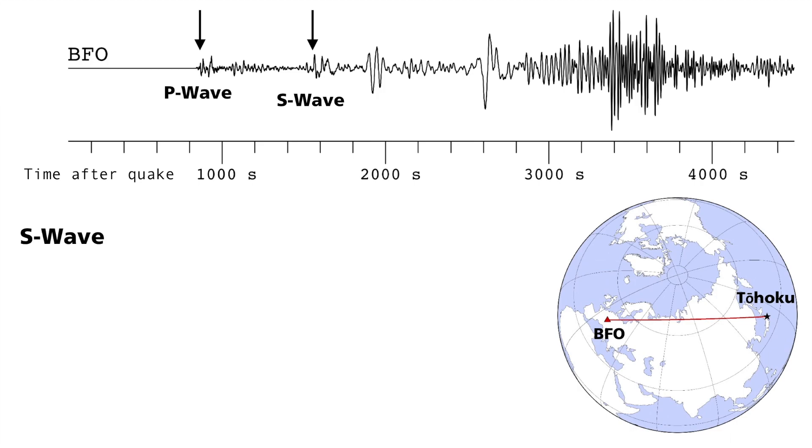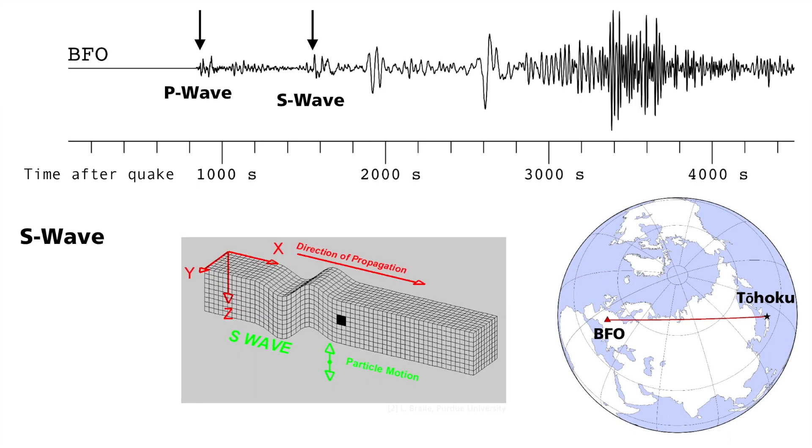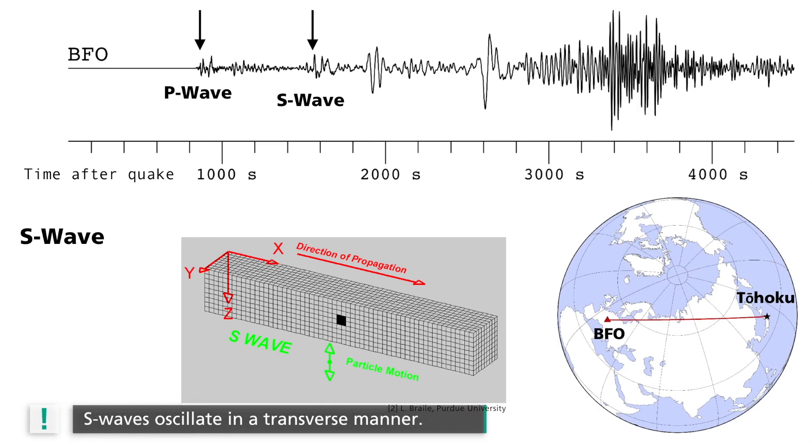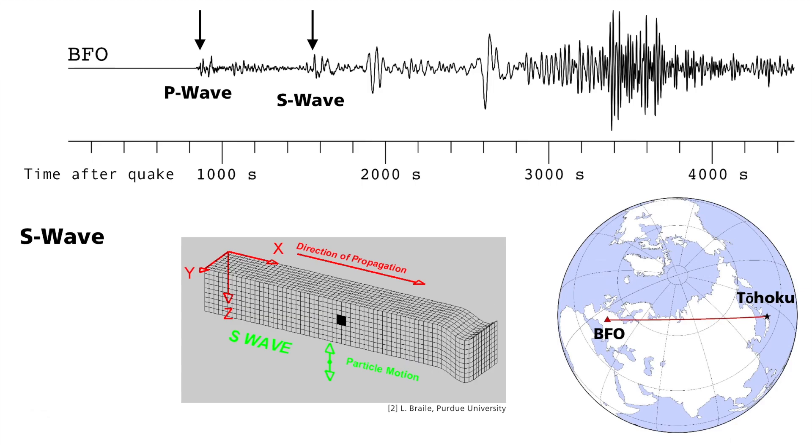S waves, the S stands for secondary, arrive later. They too are body waves, but unlike P waves, they are transverse in nature. This means that the direction of oscillation is orthogonal to the direction of propagation. They are also called shear waves.